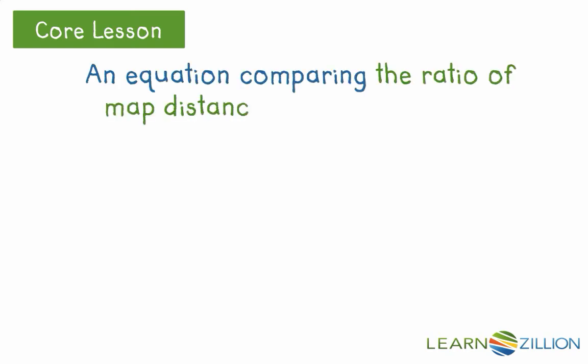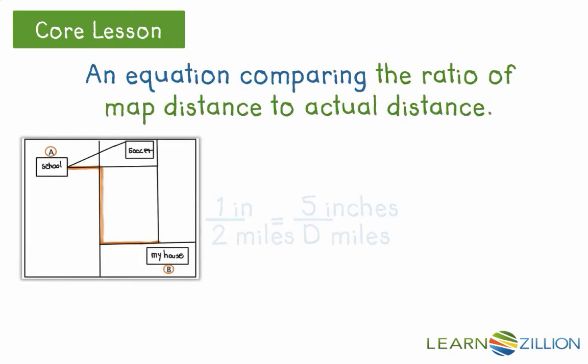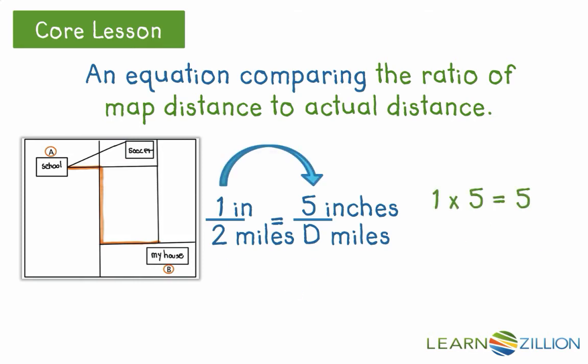We can set this up like an equation comparing the ratio of map distance to actual distance, 1 to 2 equals 5 to D, where D is the actual distance. We can see the multiplicative relationship in the equivalent ratios. 1 times 5 equals 5, then 2 times 5 equals 10. Therefore, the actual distance from point A to point B is 10 miles. Ratios in an equation format are called proportions because they are equivalent.